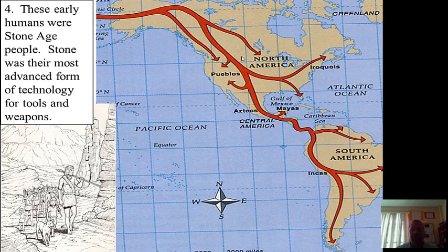Over time, these early Americans — these first Americans — would become known as the Native Americans. Groups like the Aztecs, the Incas, the Iroquois, the Pueblos, and other groups of Native Americans.